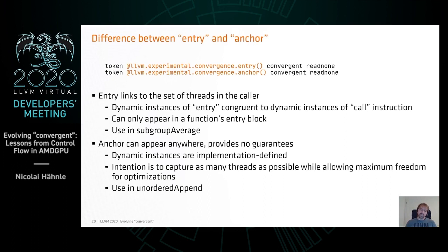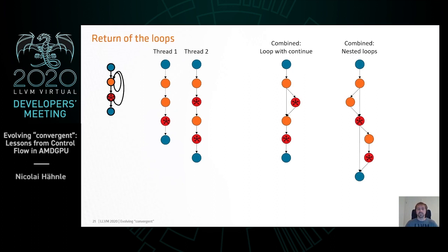Now you should have a relatively good idea of what happens in acyclic control flow. Let's get back to loops. The same example as before — which we could interpret either as a loop with continue or as two nested loops — those were the two cases from the high-level language, and the convergent operation is in the red block.